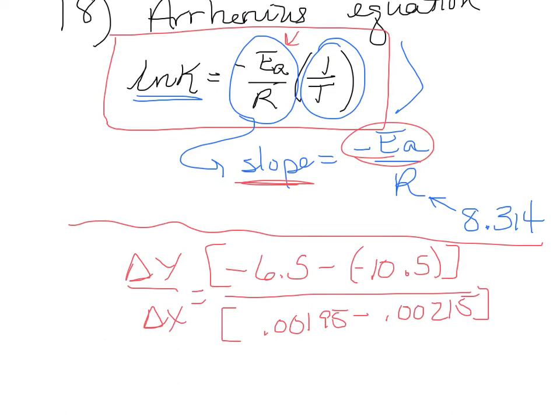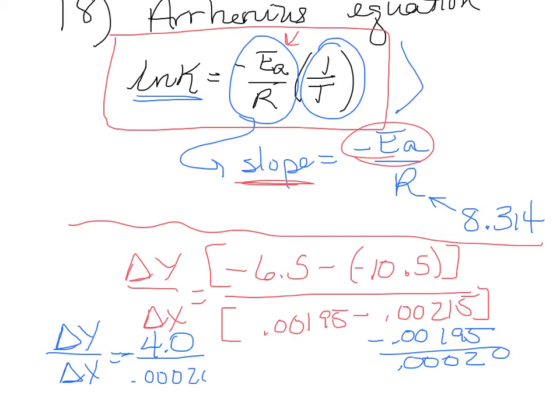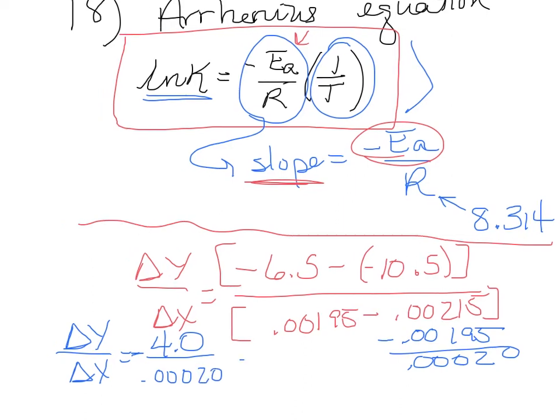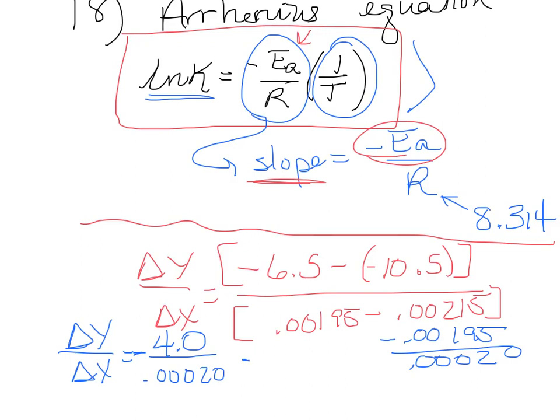Doing the addition and subtraction, the slope then is, the numerator comes out to a difference of 4. And the denominator comes out to be 0.00020. So, that gives us a slope equal to 20,000.